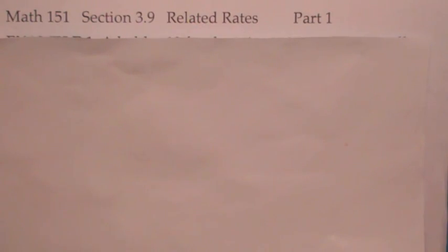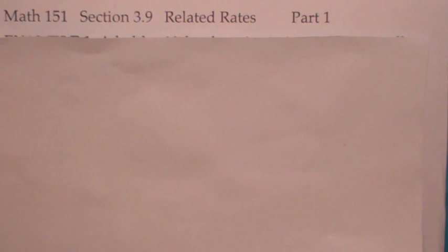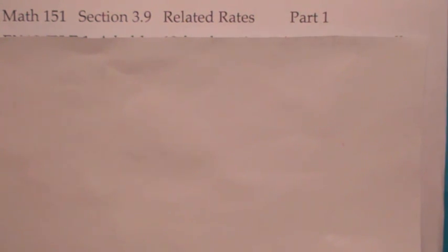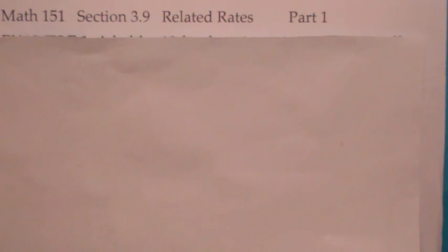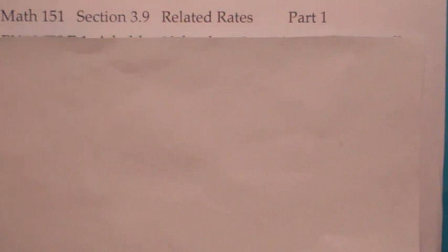So with these related rate problems, we're always going to be differentiating with respect to t. My advice is learn the basic types. There's only about five of them. And what I'm going to do right now is lead you through the five basic types. When you do the homework, try to relate the homework problems to these five examples I'm going to show you now.